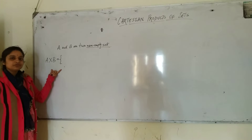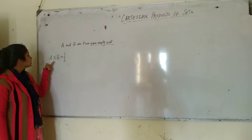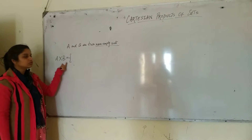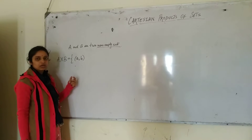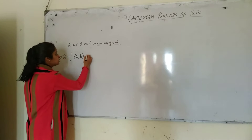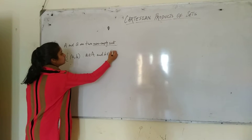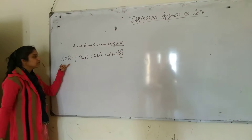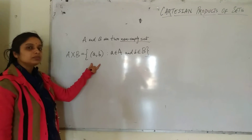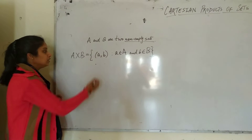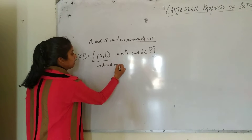A cross B is a set of all ordered pairs from A to B. We can write it as the set of all (a, b) — this is called an ordered pair — such that small a belongs to capital A and small b belongs to capital B. So this is the Cartesian product of A and B.